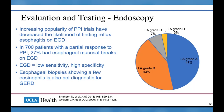Sometimes esophageal biopsies on upper endoscopy may show a few eosinophils, which is often thought to be suggestive of GERD. While reflux can cause eosinophils to appear in the esophagus, the normal esophagus should not have any eosinophils. However, having a few eosinophils on esophageal biopsies is not in itself diagnostic for GERD.